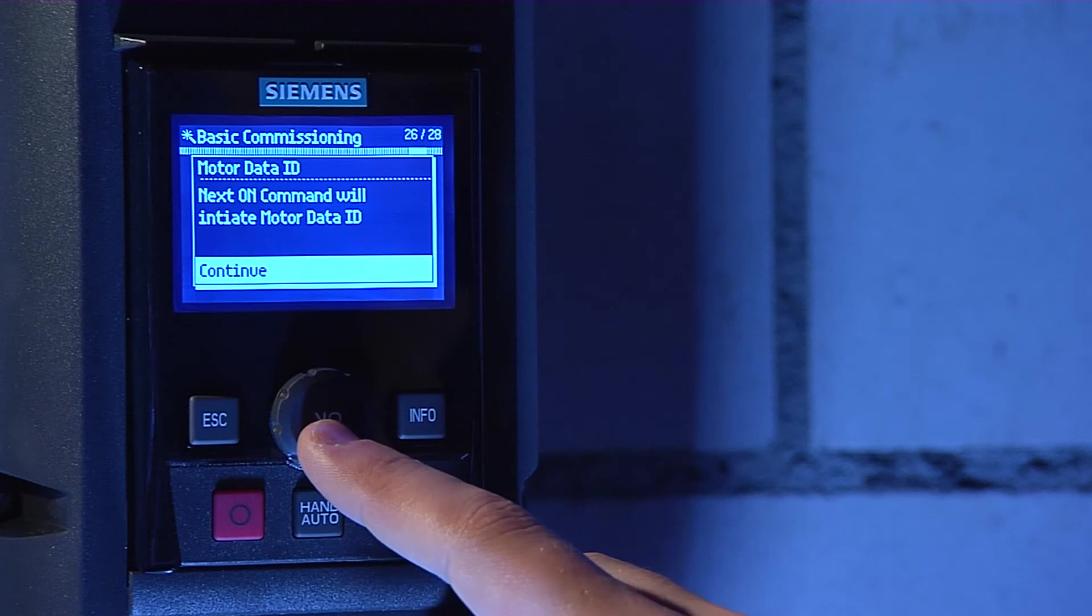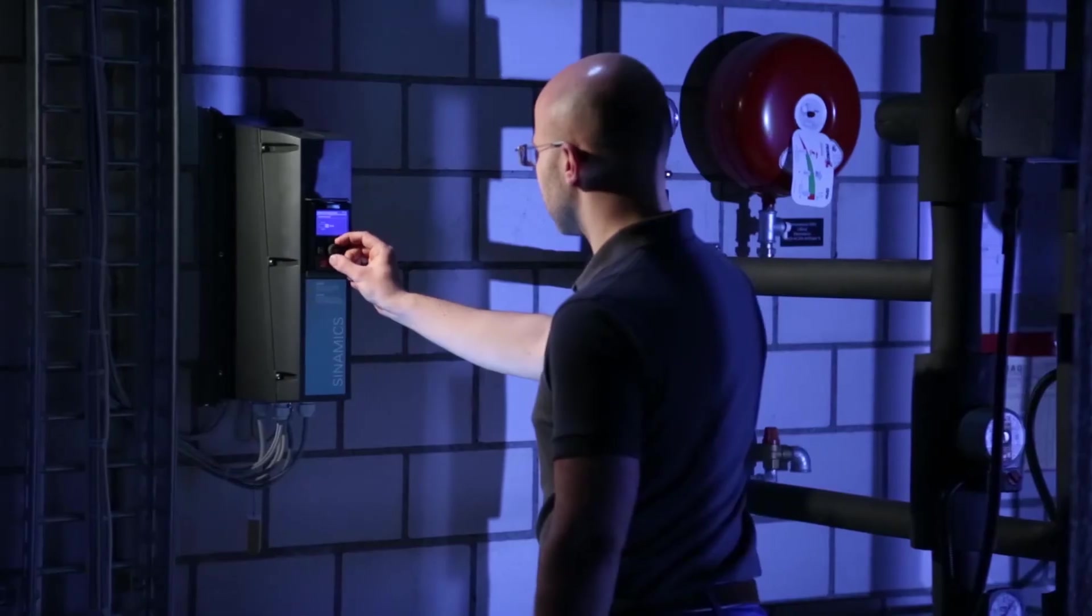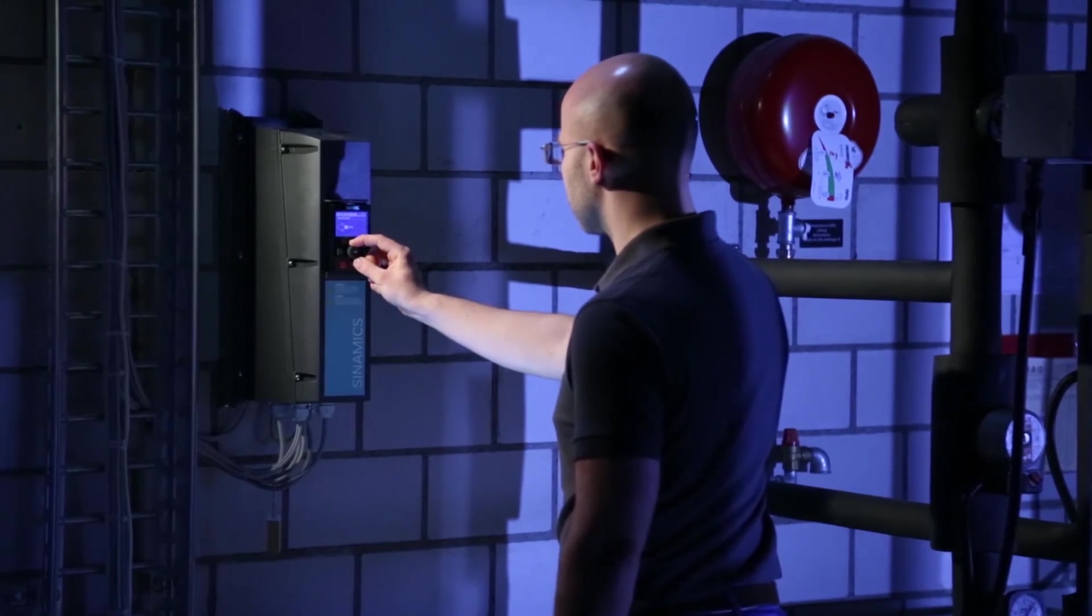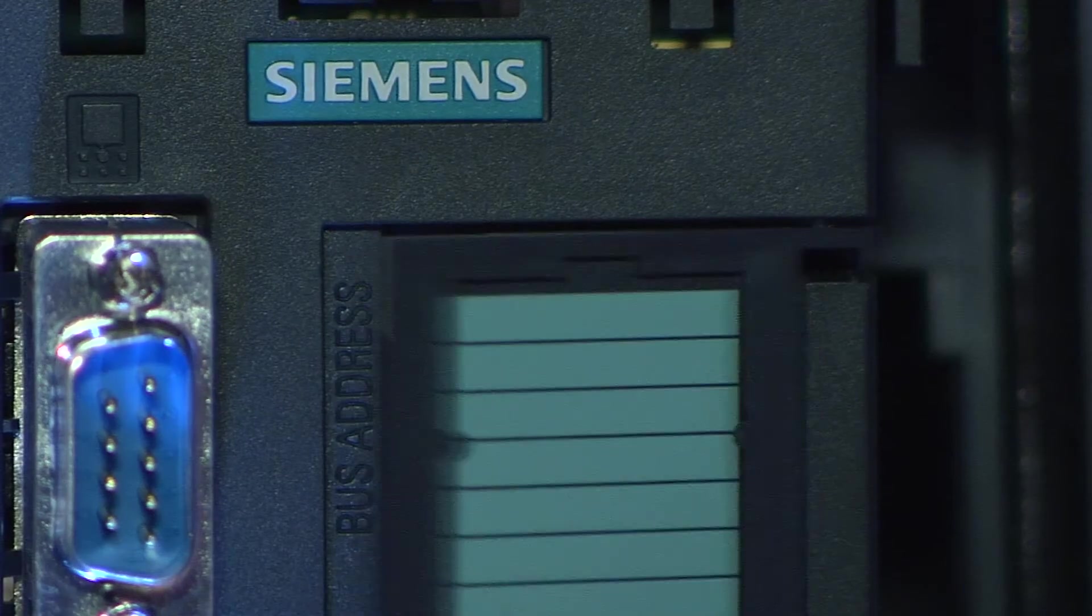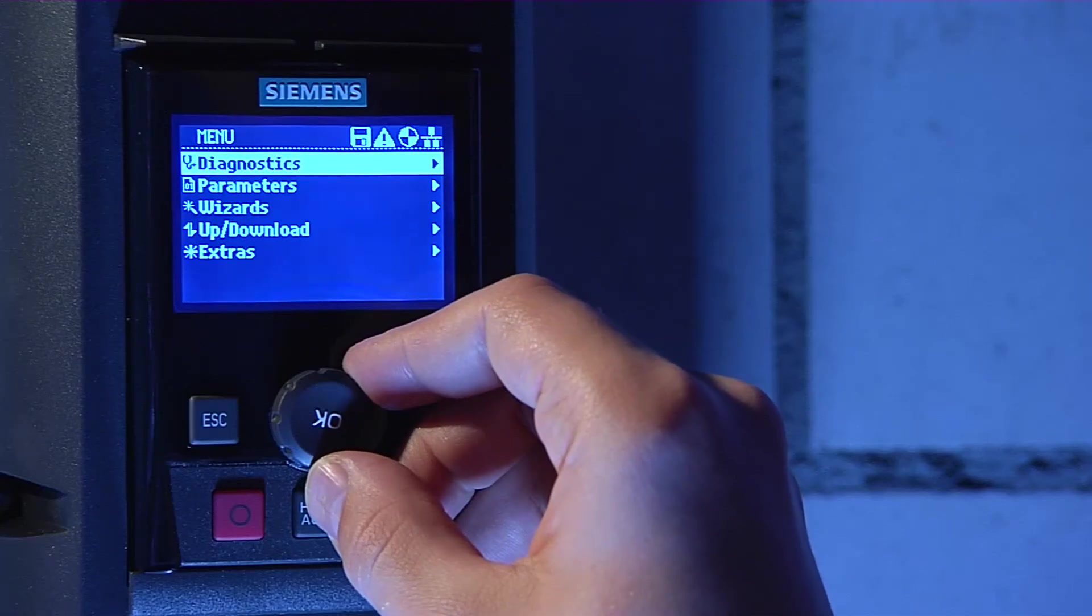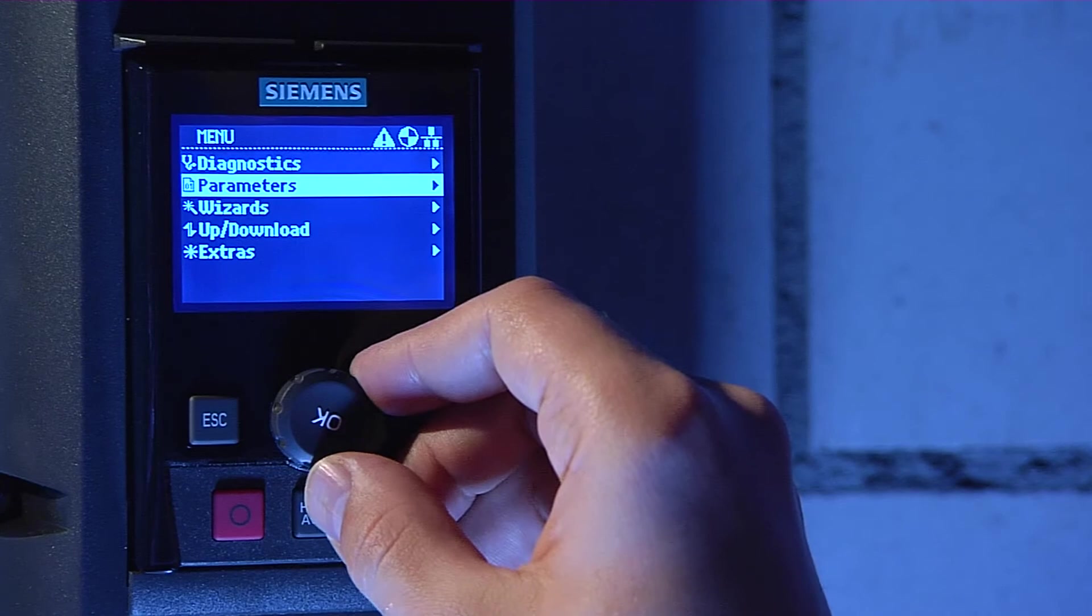The only thing that needs to be done now is to change the fieldbus address to the required value. There are two ways to set the Modbus address, either using the DIP switches on your control unit or by parameter. We will show you how to set the Modbus address by parameter.